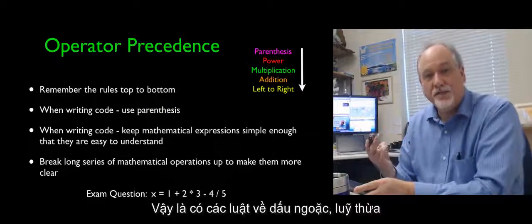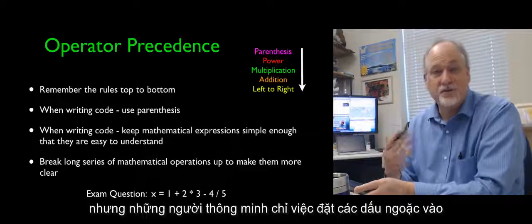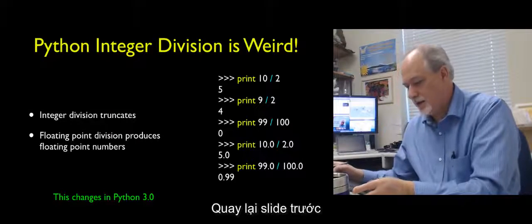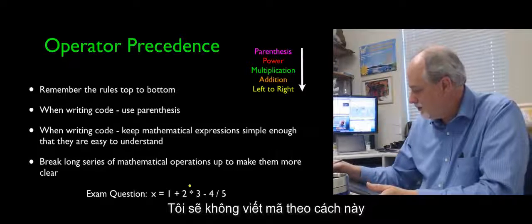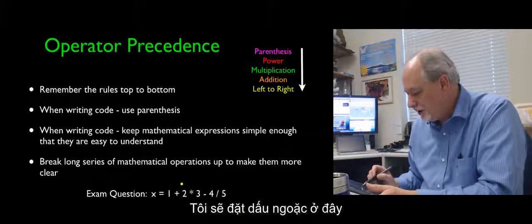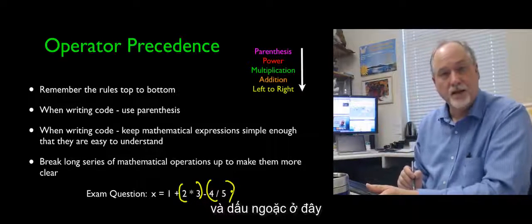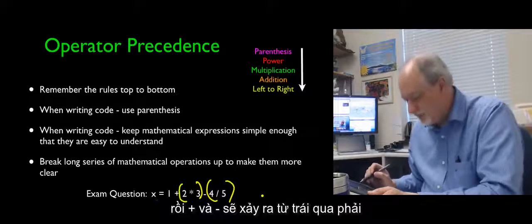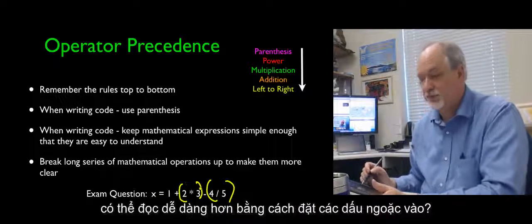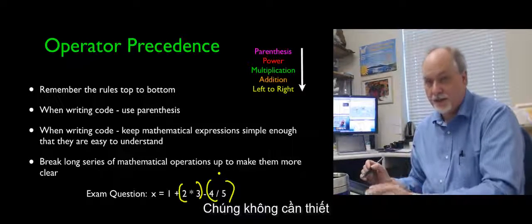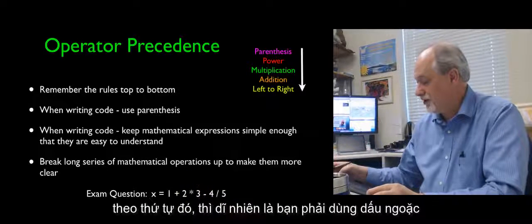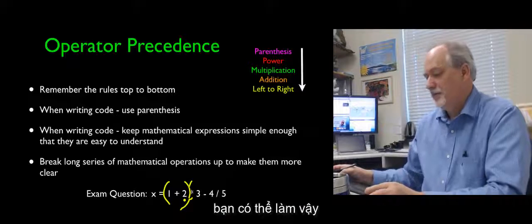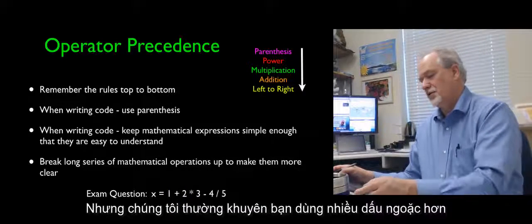The rules are: parentheses, power, multiplication, addition, then left to right. But smart people usually just put parentheses in. Here's an exam question — I wouldn't write this code without parentheses. I'd put parentheses around '2 * 3' and around '4 / 5' — they're redundant but make it easier on your readers. If you don't want the default order — say you want addition to happen before multiplication — then you must use parentheses. We tend to recommend using more parentheses rather than fewer.